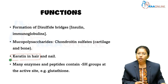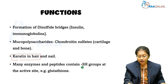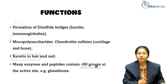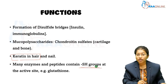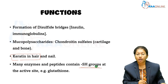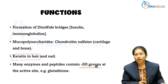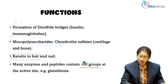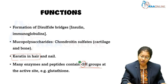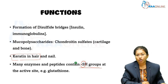Many enzymes and peptides contain SH groups at their active site, like coenzymes and glutathione — all of these contain SH groups in which the sulphur is very important.